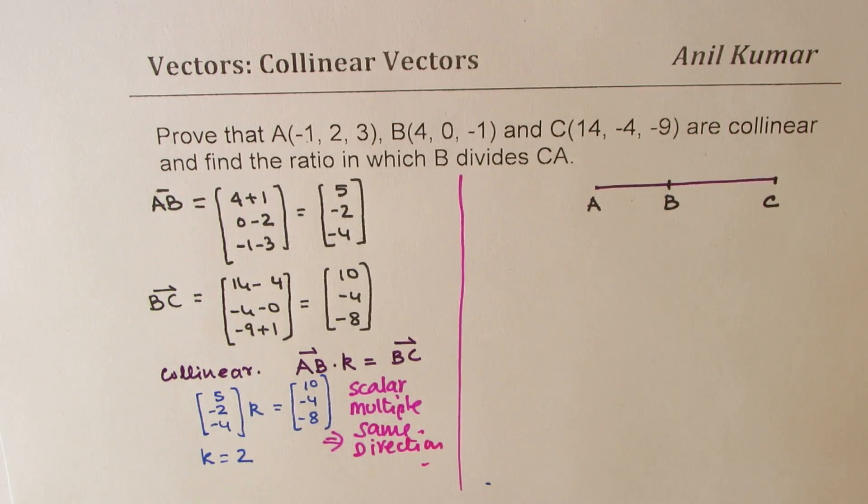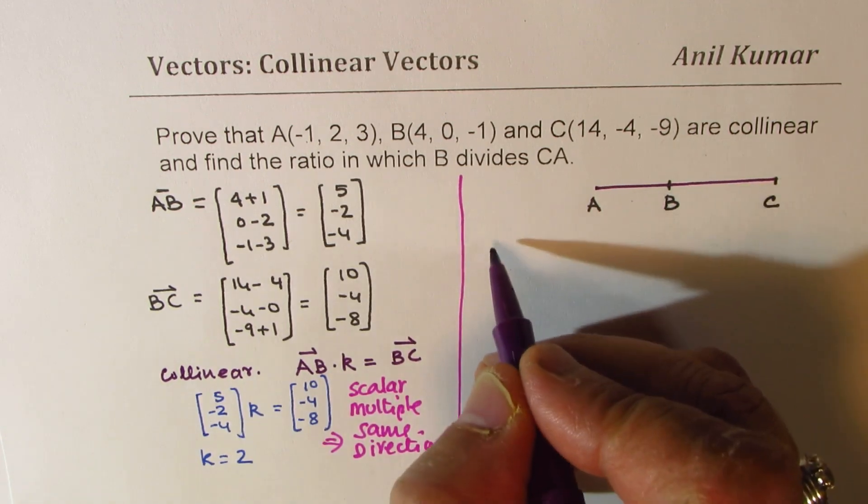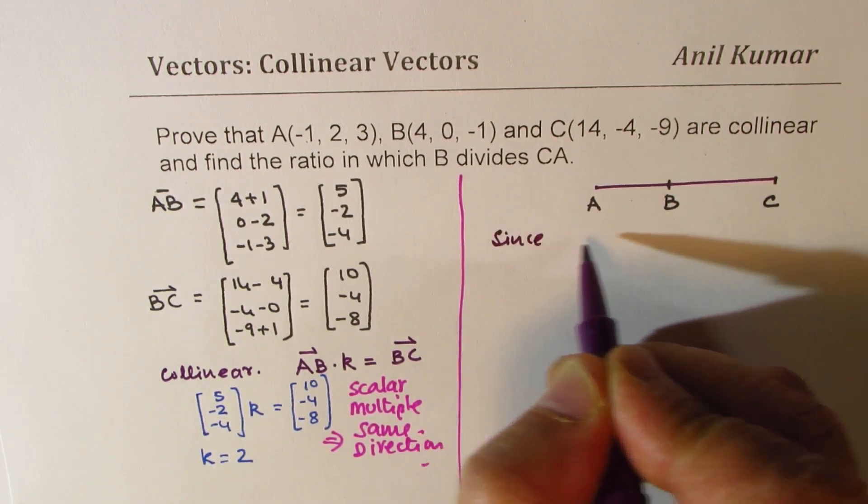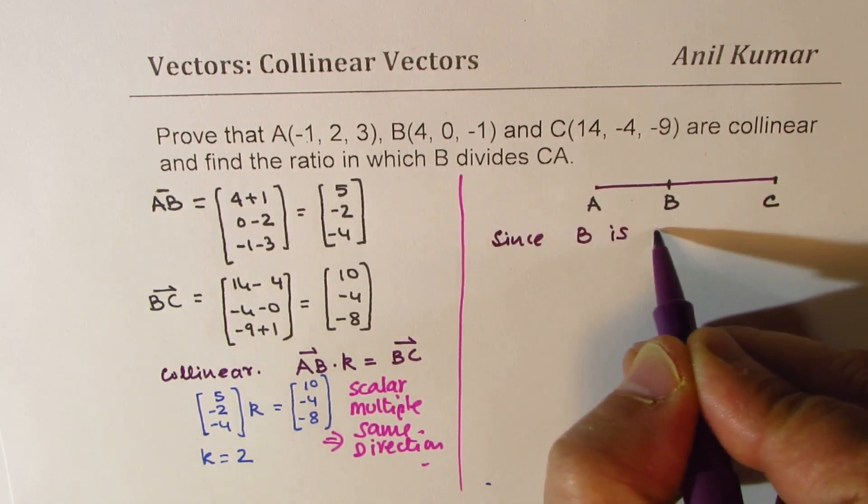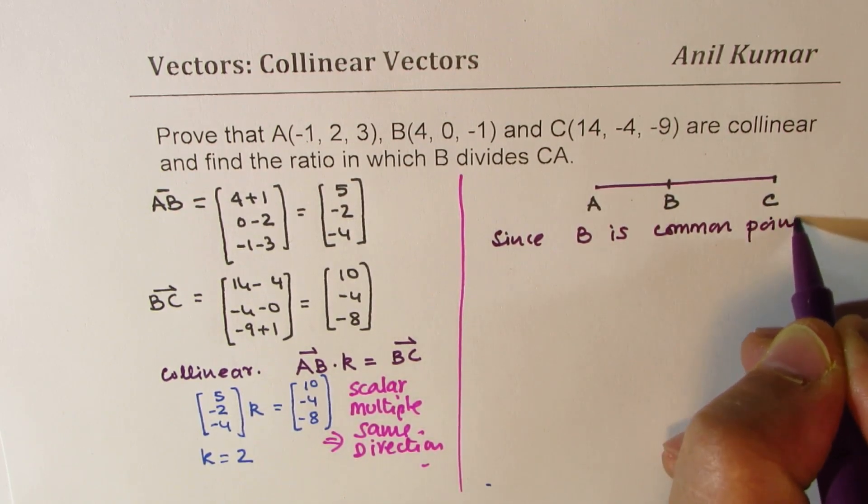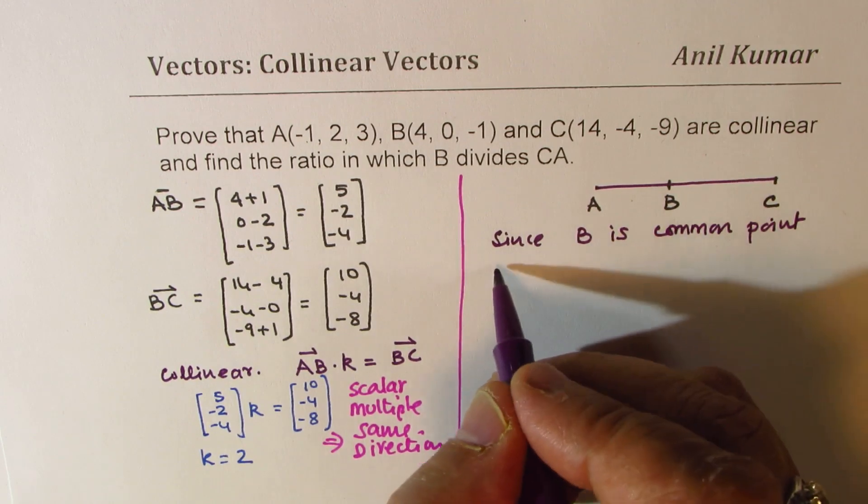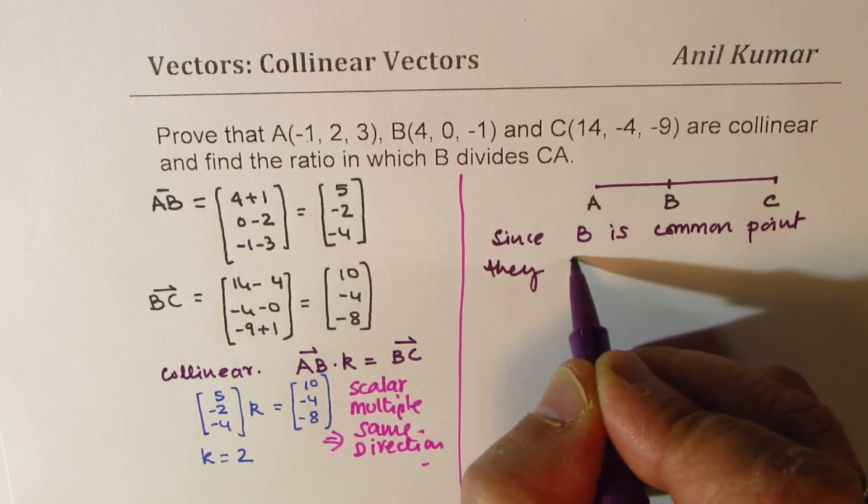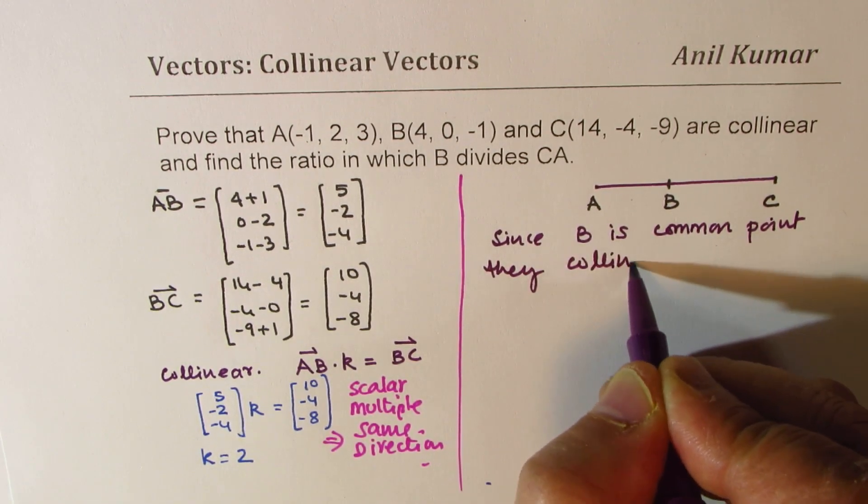Now they are collinear mainly because they have B as a common point. Since B is common point, they are collinear.